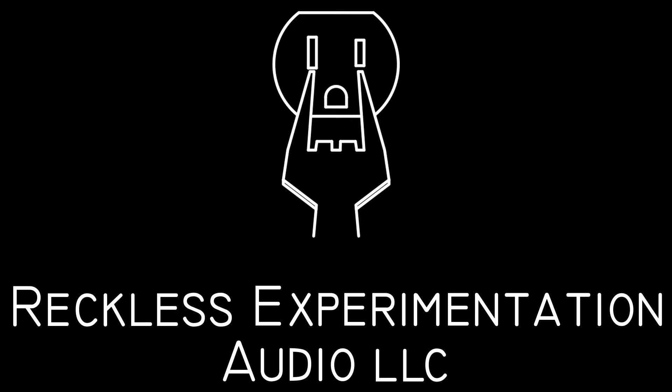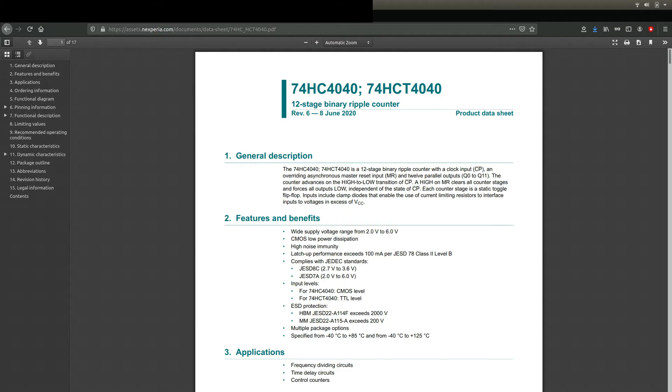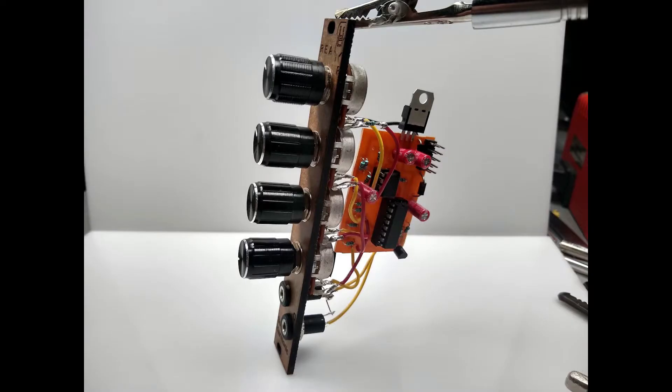So I dug through my collection of ICs and looked for something that would be musically useful by itself, and I found this chip, the 74HC4040, a 12-stage ripple counter. So in today's video, we're going to build a subharmonic generator.